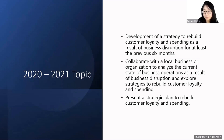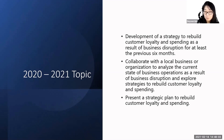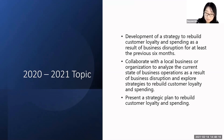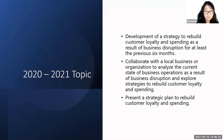For those interested in participating in DECA next year, here were the topics from this year's competition to help start thinking about how to prepare. The three topics were: development of a strategy to rebuild customer loyalty and spending as a result of business disruption for at least the previous six months due to COVID; collaborating with a local business or organization to analyze the current state of business operations as a result of business disruption and explore strategies to rebuild customer loyalty and spending; and presenting a strategy plan to rebuild customer loyalty and spending.